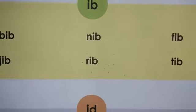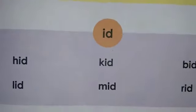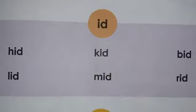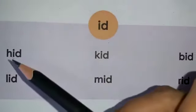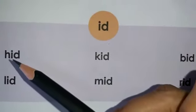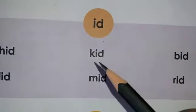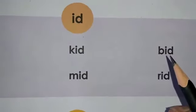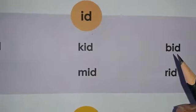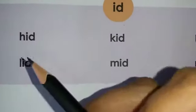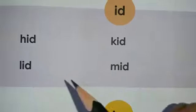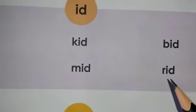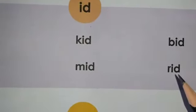Now moving on to the next one — ID clusters. Let's read the words again. H-I-D hid, K-I-D kid, B-I-D bid, L-I-D lid, M-I-D mid, R-I-D rid.